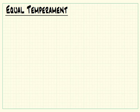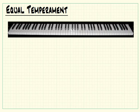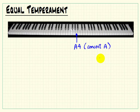Let's investigate the idea of equal temperament, or the equal tempered scale, that's used by pretty much all Western style music today. On the piano keyboard, A4 is also called concert A, which is defined to be 440 Hertz exactly. That's an international standard.